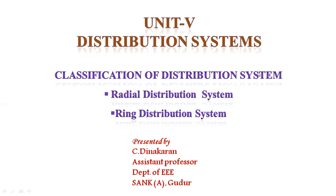The distributor consists of conductors where N number of tappings are connected. N number of connections are taken in the particular line. Here, the current flowing through the distributor line is not constant throughout the length of the line — the voltage should be maintained constant, but the current limit will be varying. The service main is the conductor connected from the EB pole to the energy meter — that is what the service main represents.